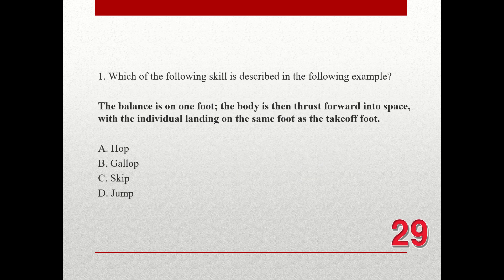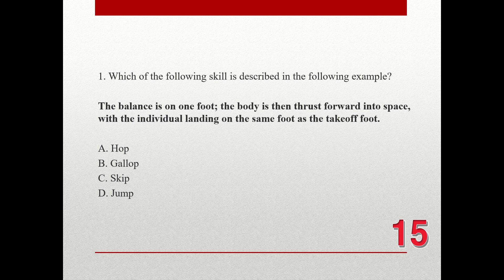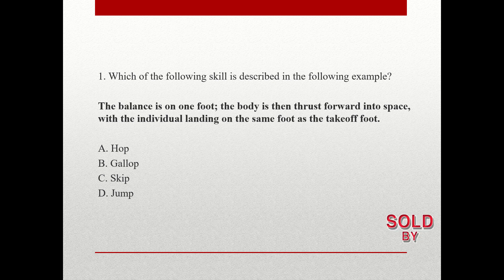Question number one. Which of the following skills is described in the following example? The balance is on one foot; the body is then thrust forward into space with the individual landing on the same foot as the take-off foot. The choices are A. Hop, B. Gallop, C. Skip, D. Jump. The correct answer is A. Hop.